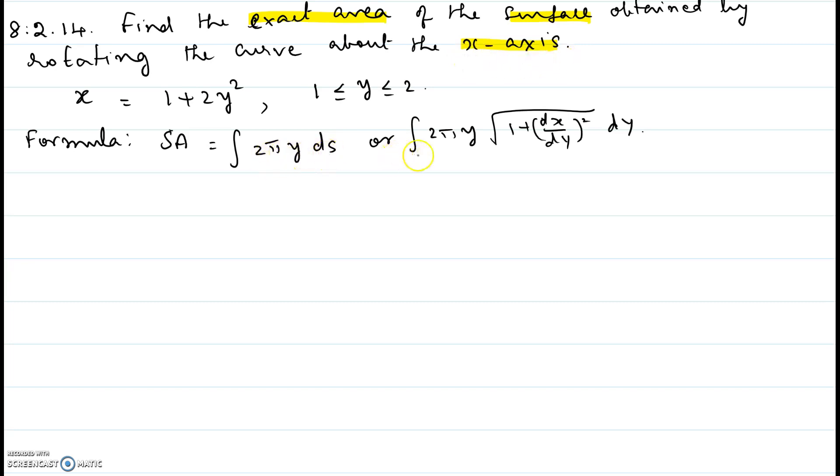And it is integral 2πy, and we have two choices for ds. We'll pick the one which is square root of 1 plus (dx/dy) squared dy. In some problems you may have to choose square root of 1 plus (dy/dx) squared dx if you know